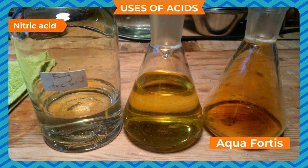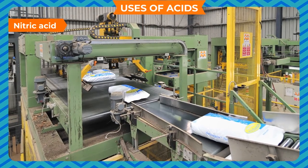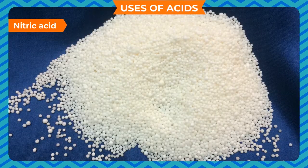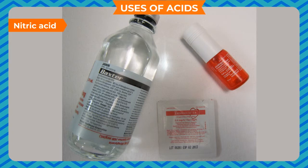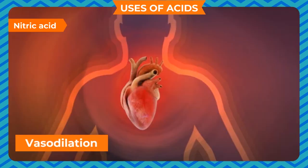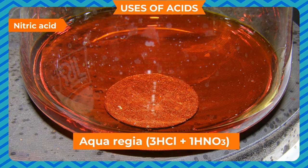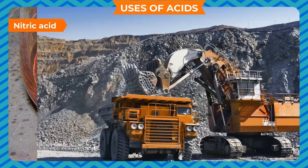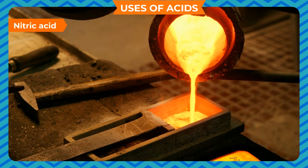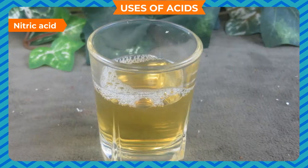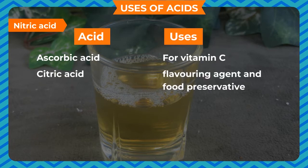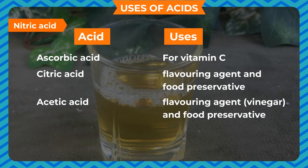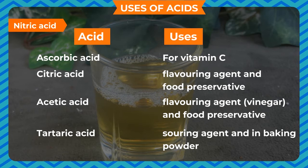Nitric acid, also called aqua fortis, has the chemical formula HNO3. Its main uses are: manufacturing nitrogen-rich fertilizers like ammonium nitrate, manufacturing explosives such as TNT (trinitrotoluene) and nitroglycerin (used medically for vasodilation), preparing aqua regia (3 HCl + 1 HNO3), extraction of metals from their ores, and purification of precious metals like silver and gold. Other acids and uses: ascorbic acid for vitamin C; citric acid as a flavoring agent and food preservative; acetic acid as a flavoring agent (vinegar); tartaric acid as a souring agent and in baking powder.